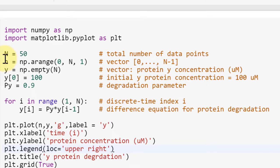And this large N is the total number of data points for the simulation. Basically it tells us how long the simulation will be and we have 50 for large N.